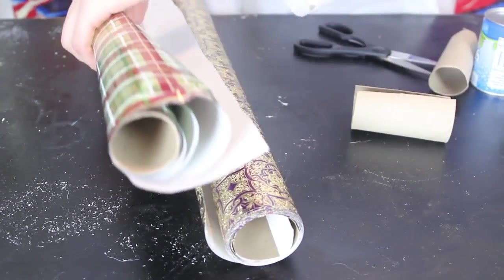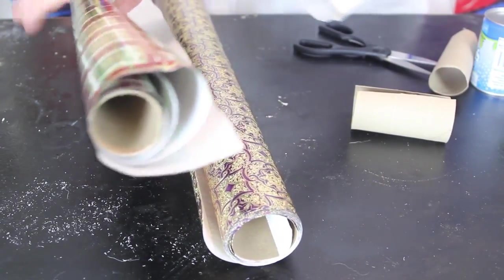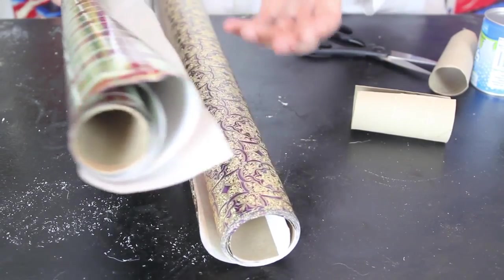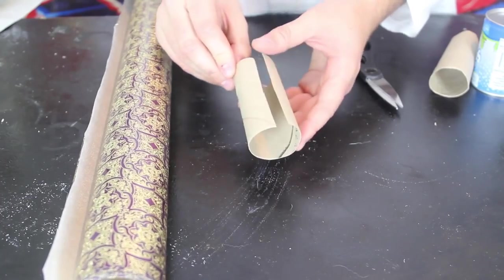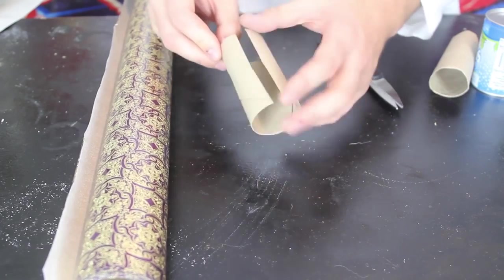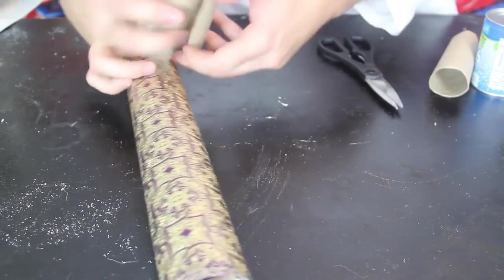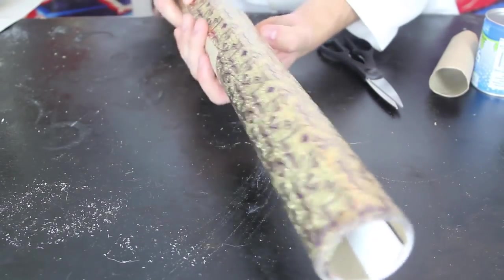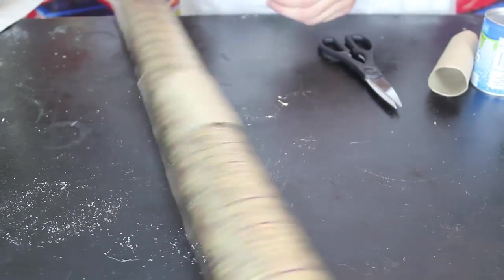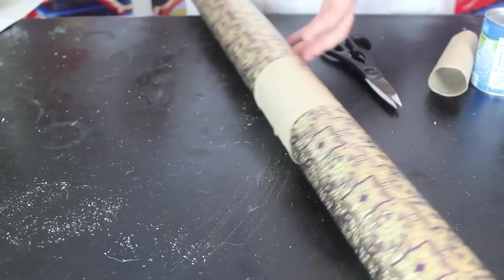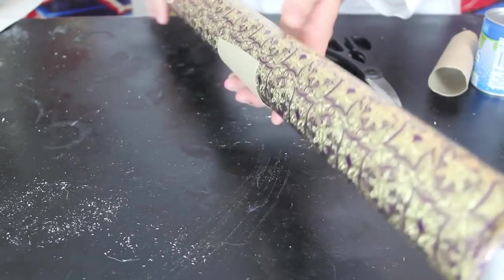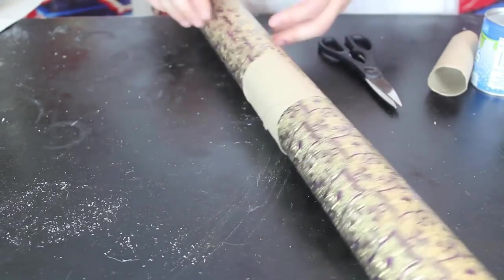Don't you hate it when your wrapping paper gets unwrapped like that and gets messy and even ruined? All you're gonna need is one of those paper toilet tubes, cut it like that and just put it on it. Your paper is not gonna roll away anymore and unroll. It's just gonna stay intact. Pretty awesome, right?